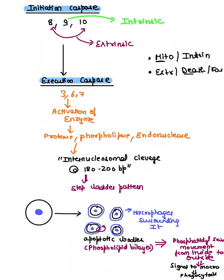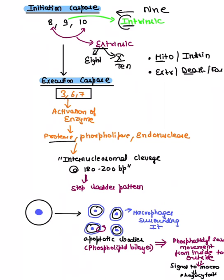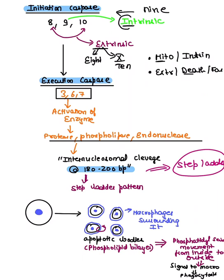Extrinsic death receptor pathway: FAS and FAS ligand interact, forming the FADD domain. Extrinsic uses caspase 8 (E=8) and caspase 10 (X=10). Once activated, they go to executioner caspases 3, 6, and 7, which activate protease, phospholipase, and endonuclease — causing cleavage at 180–200 base pairs, explaining the step-ladder pattern in apoptosis. CD95 is the apoptosis marker.